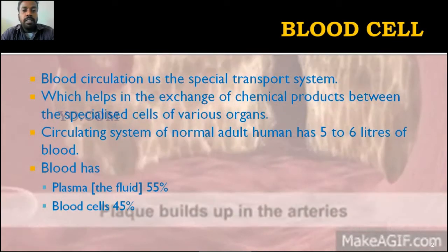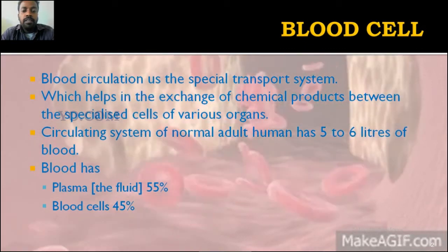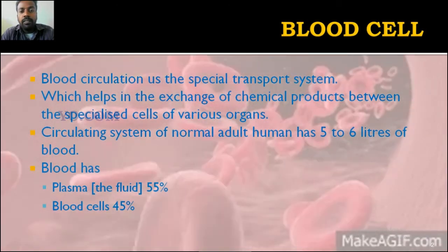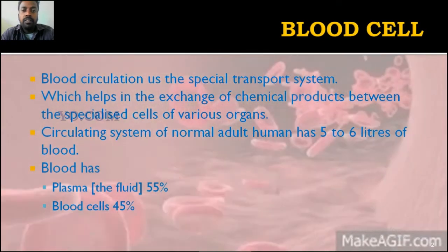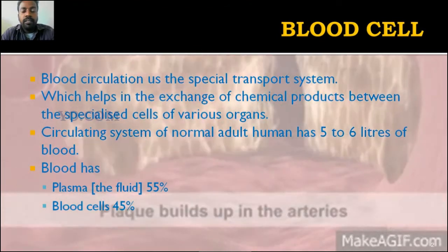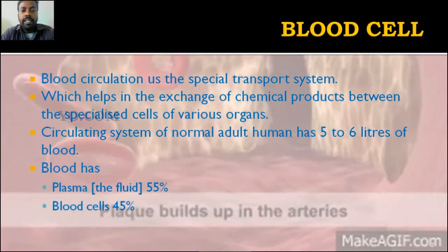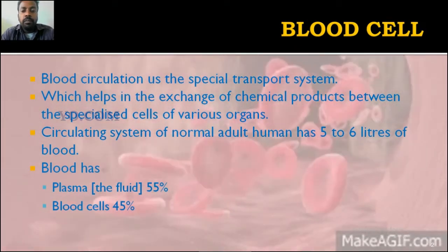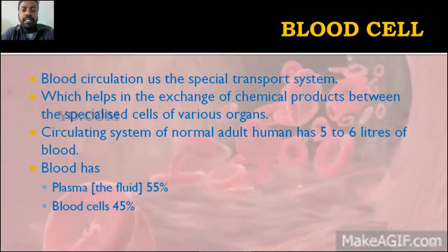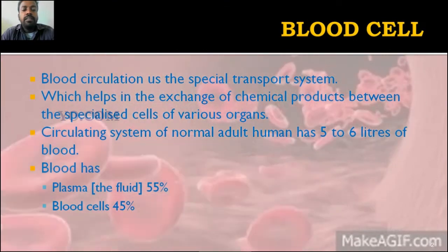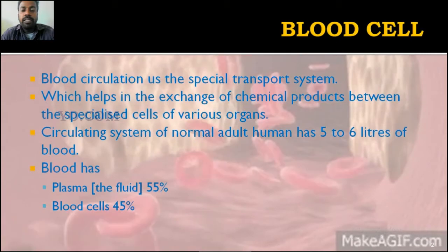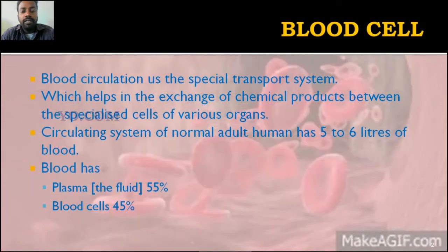What is the use of blood cells, or what is the use of blood generally? The blood takes oxygen from the heart and circulates it to all the organs. In the same way, it takes blood containing carbon dioxide back to the heart. All the cells need oxygen, so the blood carries oxygen and also carries carbon dioxide in the opposite direction. Blood circulation is a special transport system which helps in the exchange of chemical products between specialized cells of various organs.